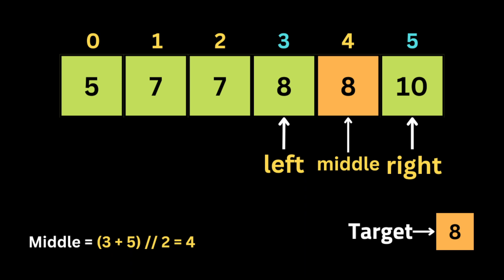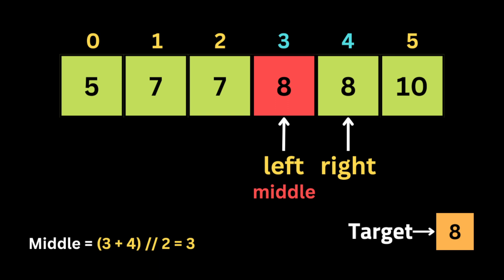After recalculating the middle pointer, we find it equals the target. But we still need to verify it's the first appearance. The target is at index four, so it's not index zero. We check if the previous number equals the target — it does — so we move the right pointer to the previous index and recalculate. Now the middle pointer equals the target and it is the first occurrence, so we've found the start of the target's appearance.